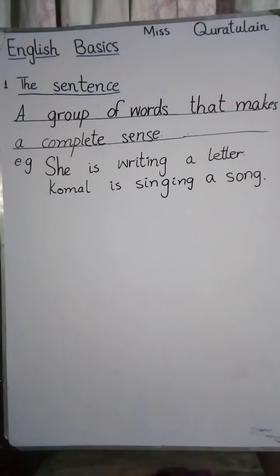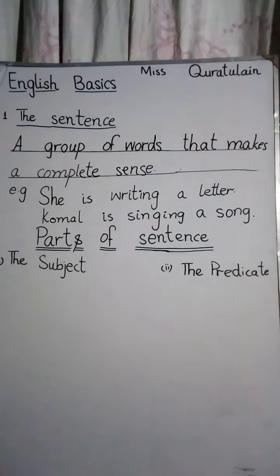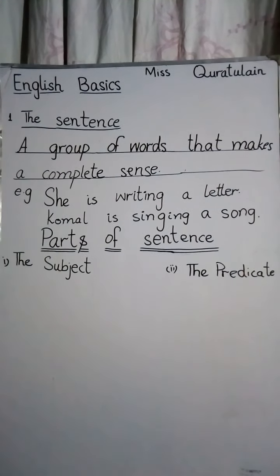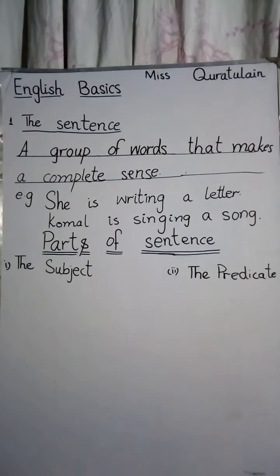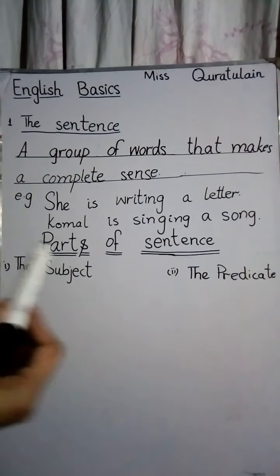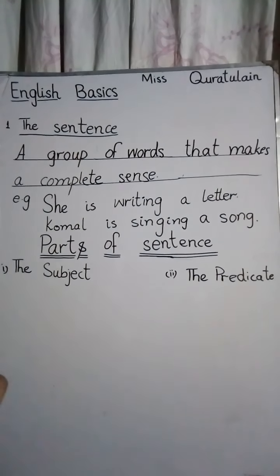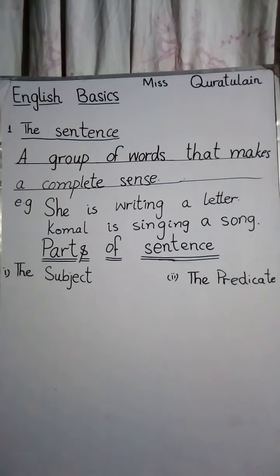Now we move on to the parts of a sentence. The first is the subject and the second is the predicate. The subject is a word or words denoting the person or thing about which something is said. You can say a subject is a person who is doing some action.